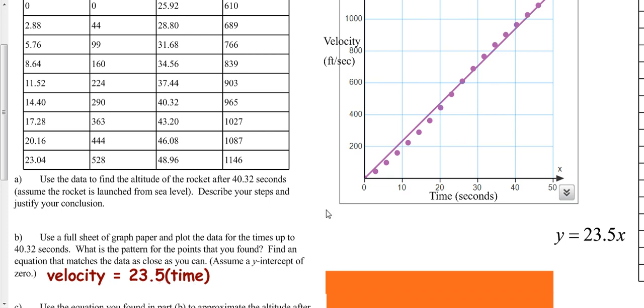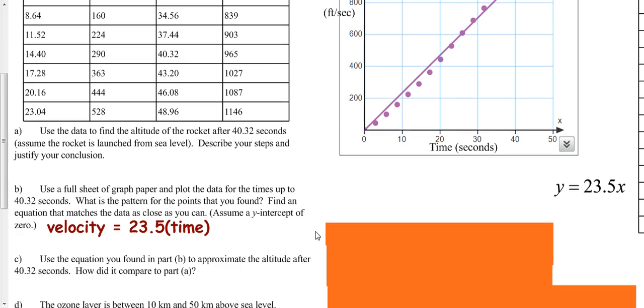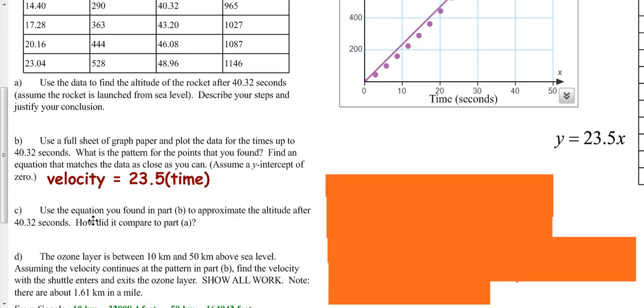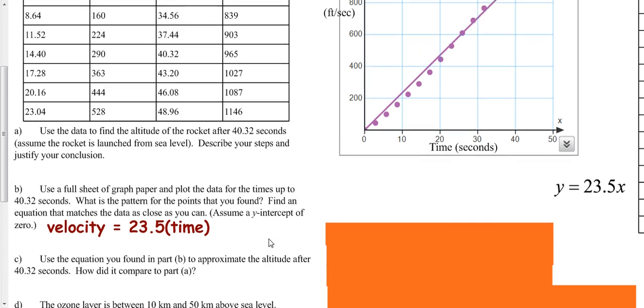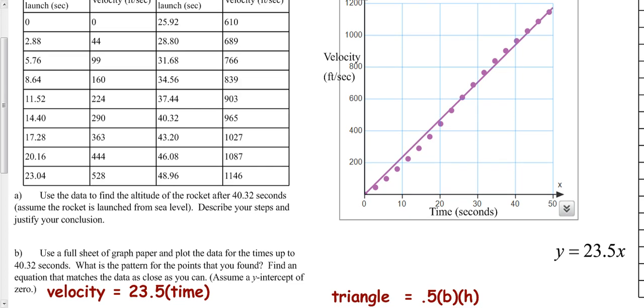Our velocity is really our slope of 23.5 times our time. That would be the equation for our velocity. Then it says from your equation find your altitude after 40.32 seconds.